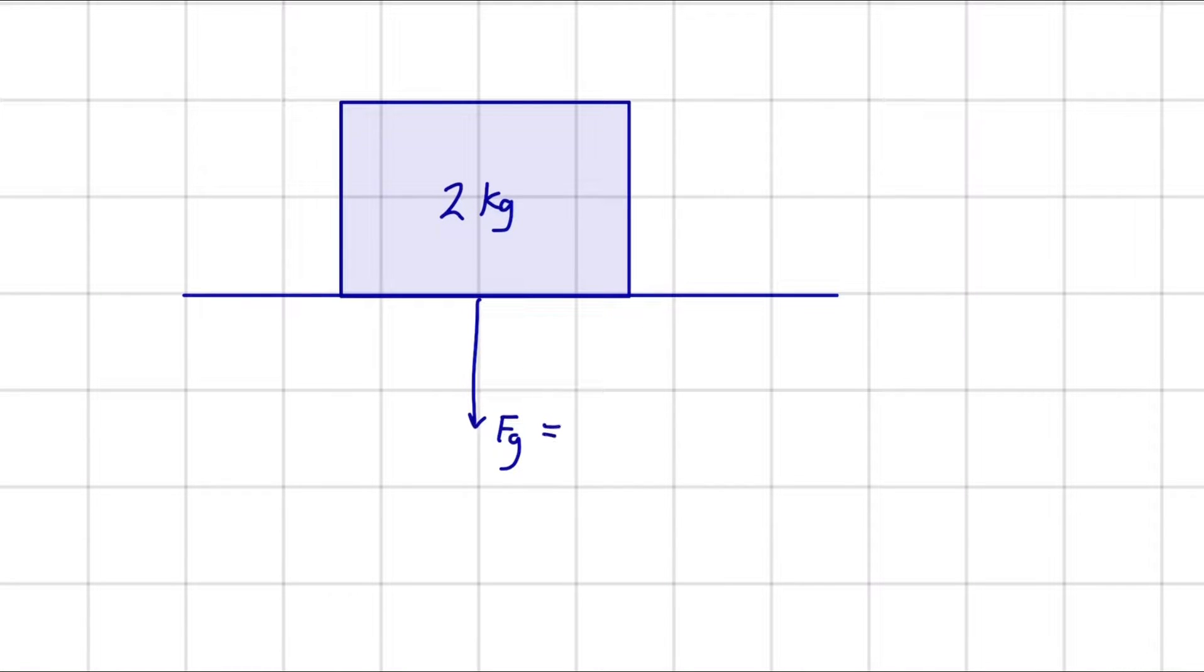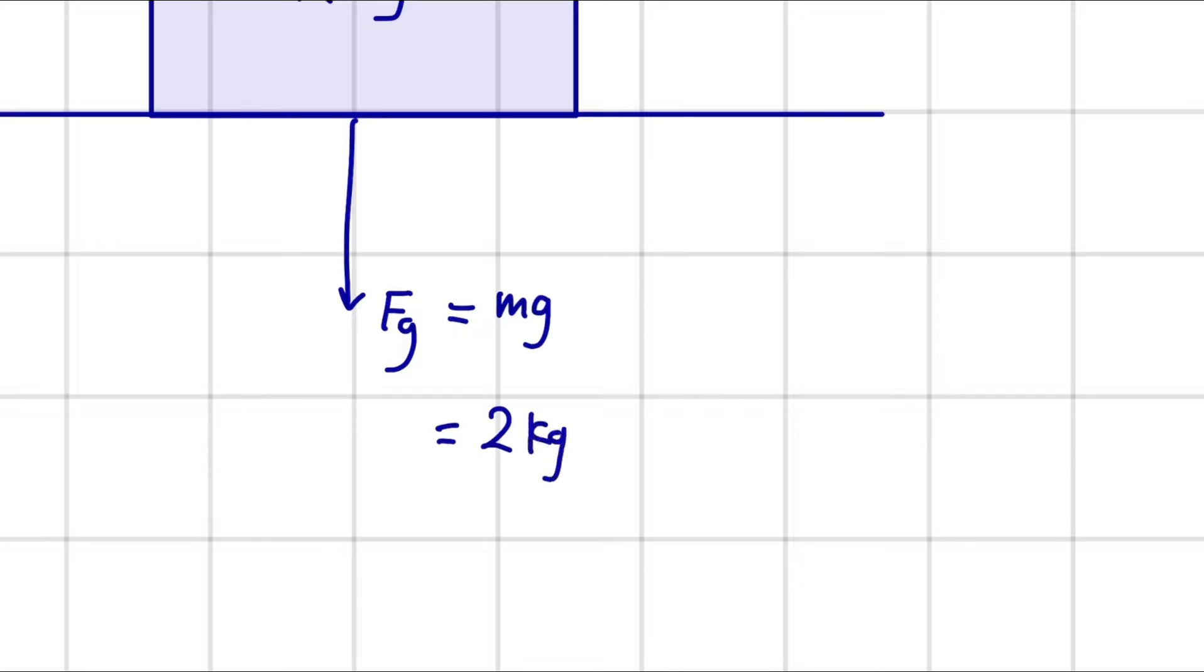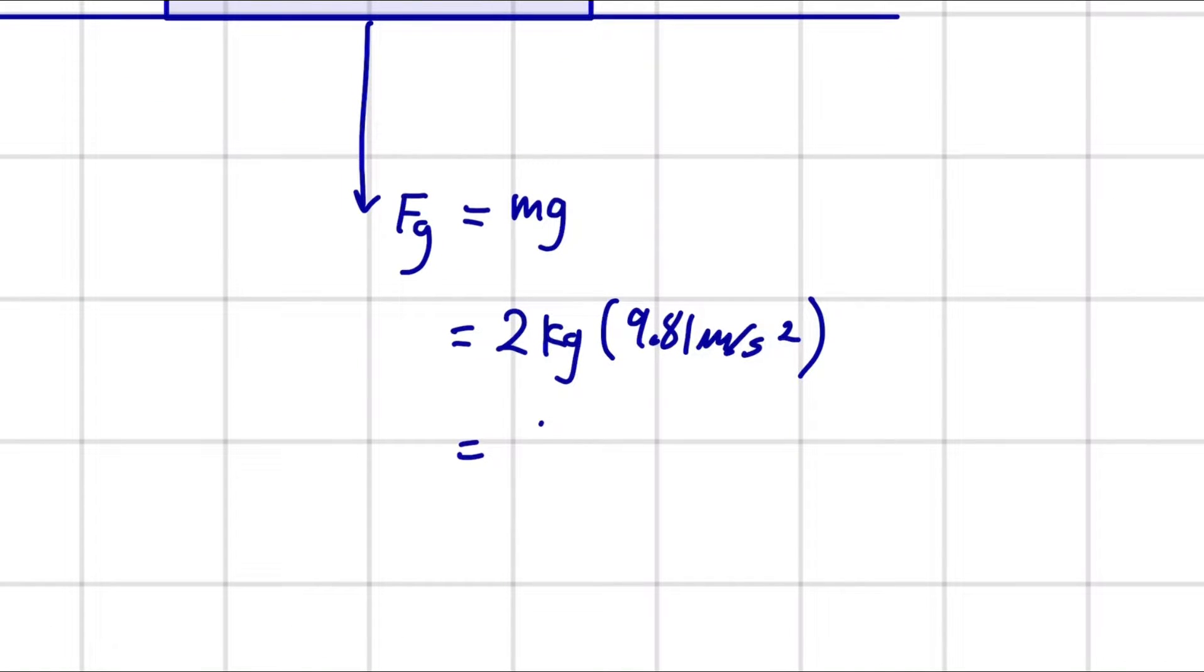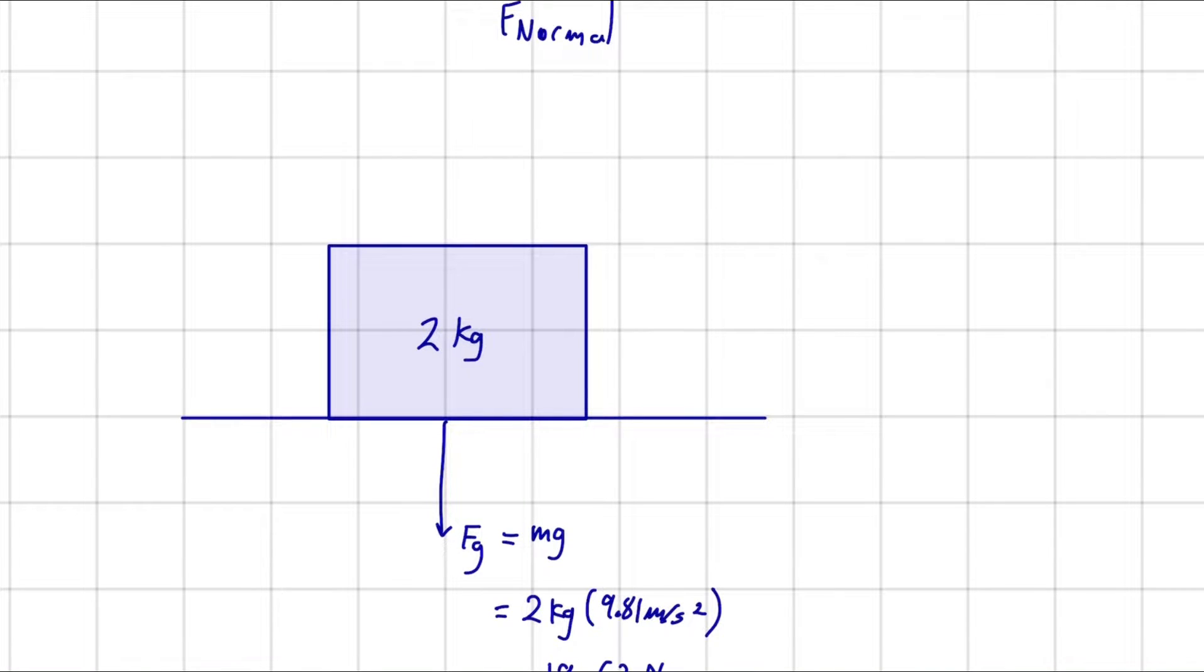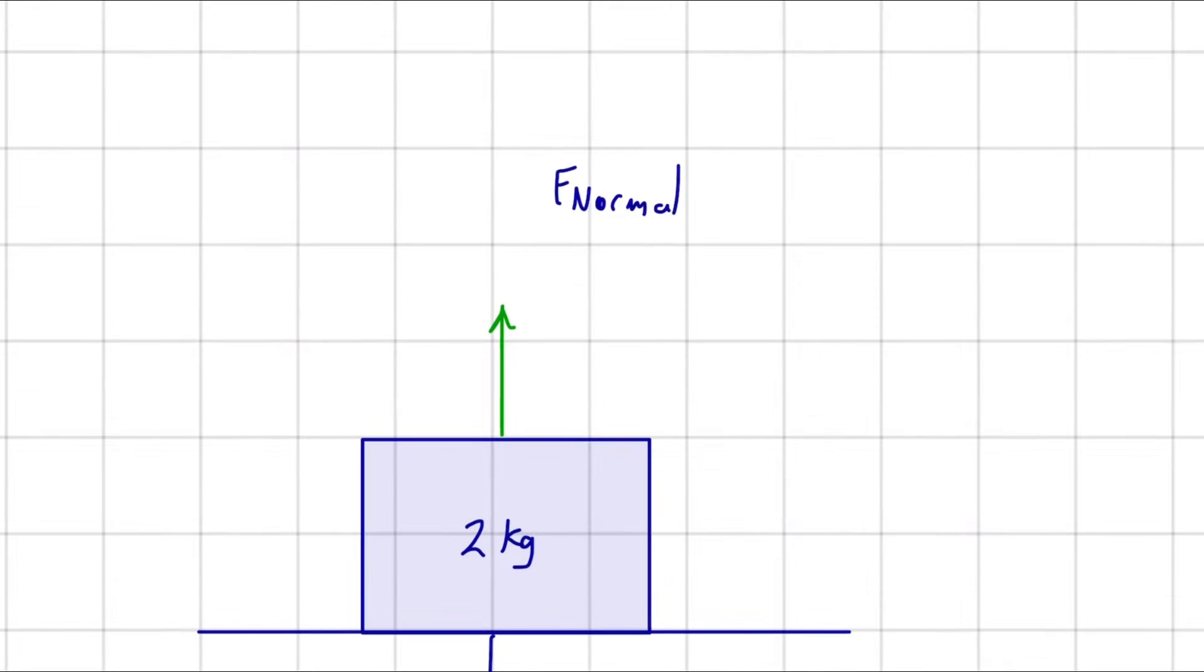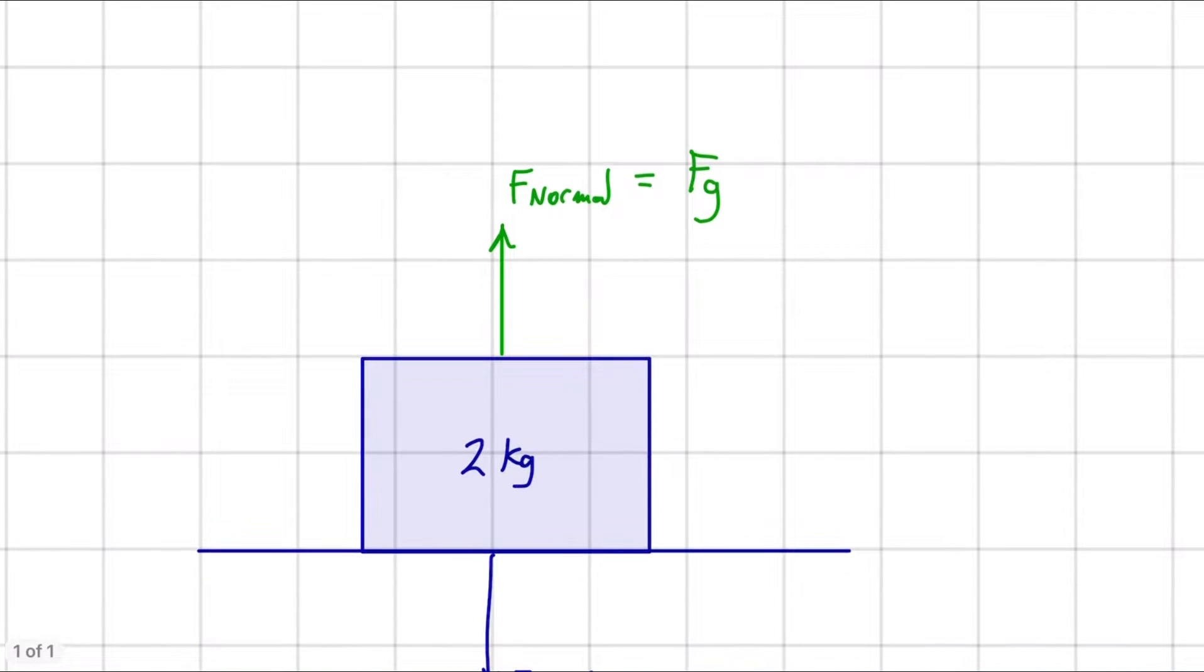What would be the force of gravity? The force of gravity is equal to mg, the mass times the gravitational constant. So 2 kilograms times 9.81 meters per second squared, which equals 19.62 newtons. But there's another force that stops this from getting pulled through the ground. The ground has to act on this object to stop it from moving. In the opposite direction, but equal in magnitude, is the normal force. It is equal to F_g, equal in magnitude but opposite in direction.